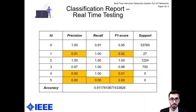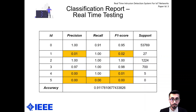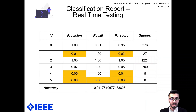This is the classification report from real-time testing. As can be seen from the table, attacks 1, 4, and 5 performed very poorly, mostly because of low support received during testing. But overall, attacks 0, 2, and 3 performed fairly well. More on this in the conclusion.